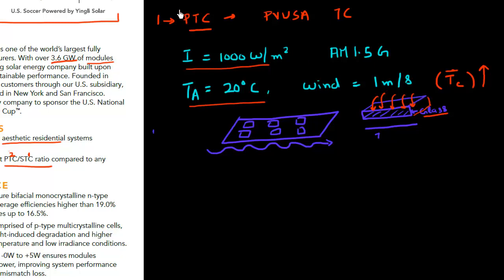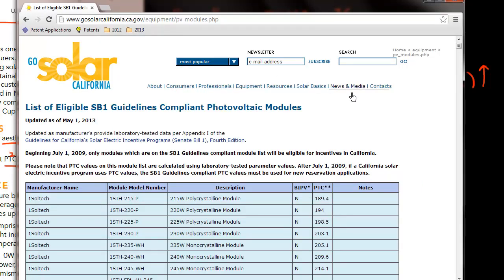So this PTC rating or this power rating under these PVUSA test conditions, it's usually measured by an independent body. So for example, for the state of California, there's this California Energy Commission. And they have this website where they measure the efficiency of different modules. Also they list out, they make a list of what are the manufacturer of these modules, what is the module number,